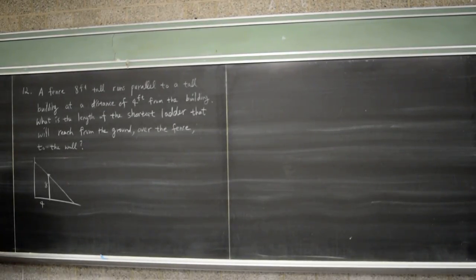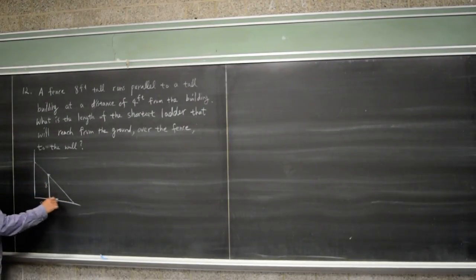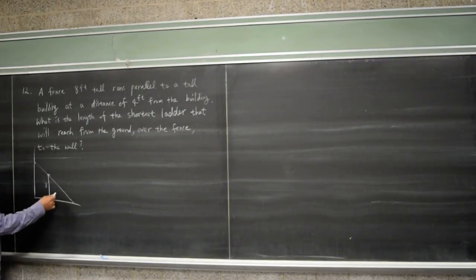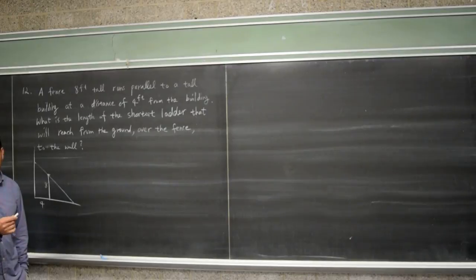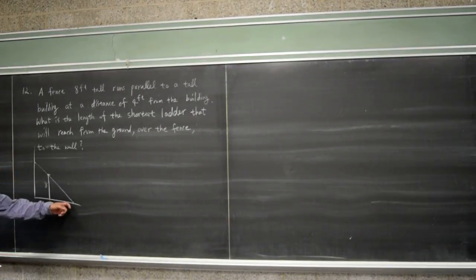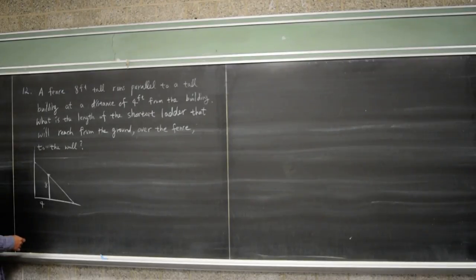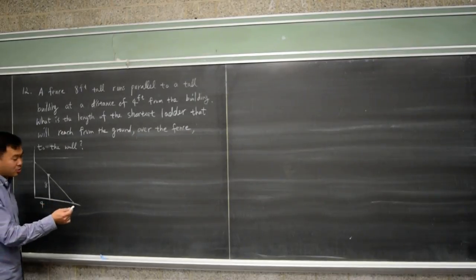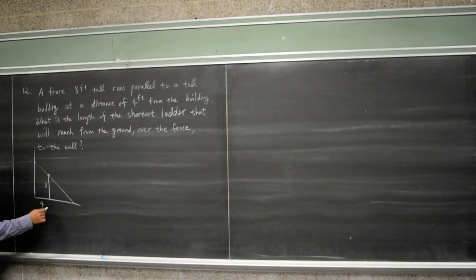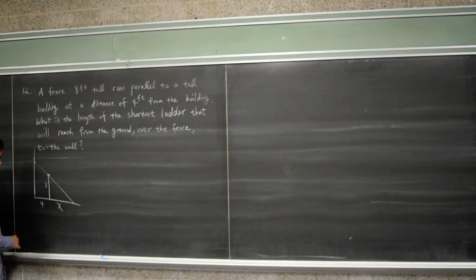So we have these two triangles. Once you understand the situation — this is the building, that's the fence, this is the ladder — you're trying to see what's the shortest ladder that can go from here to there. We need to put some variables in order to come up with equations and the objective function. So let's put x here and y here.